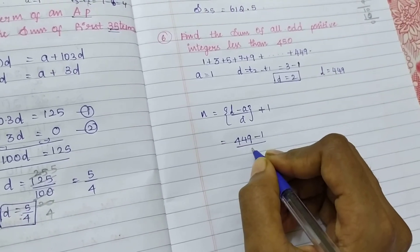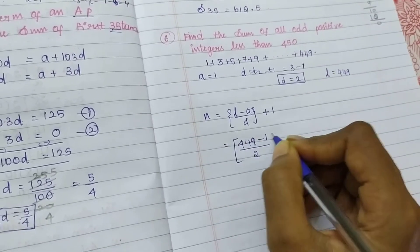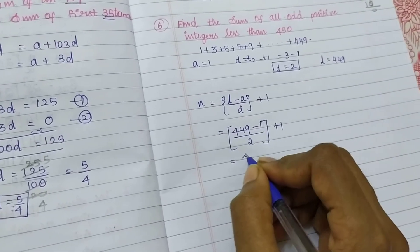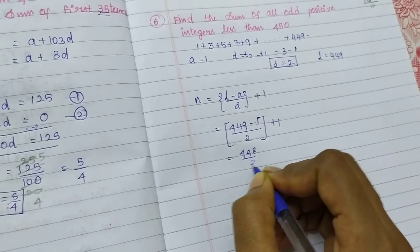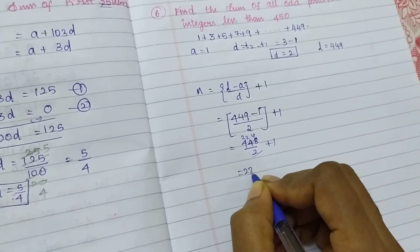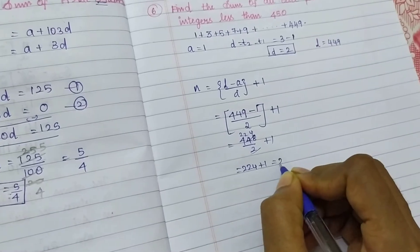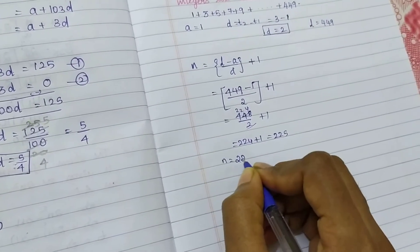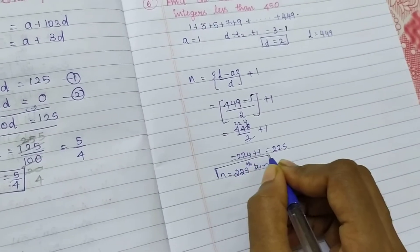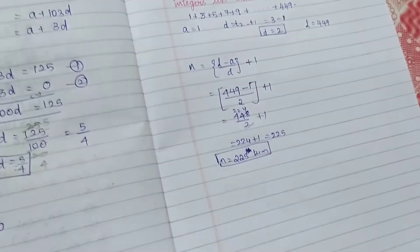449 minus what is my A value? 1. What is my D value? D value is 2, plus 1. That's equal to 448 by 2 plus 1. I can cancel, so 224 plus 1 is equal to 225th term. So N is equal to 225.